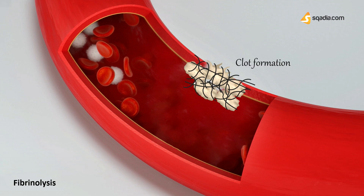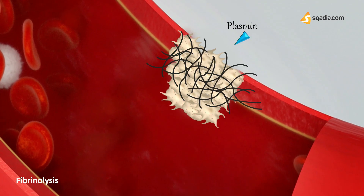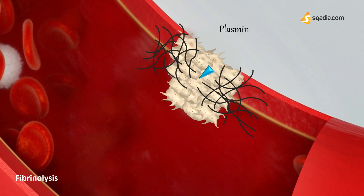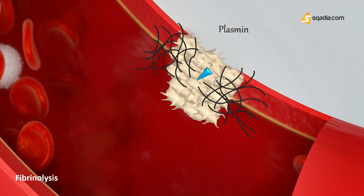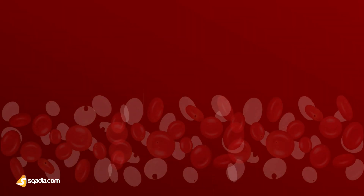In fibrinolysis, the clot is broken down by an enzyme known as plasmin — the new key player in this process. Plasmin is a serine protease that acts to dissolve the fibrin blood clots.